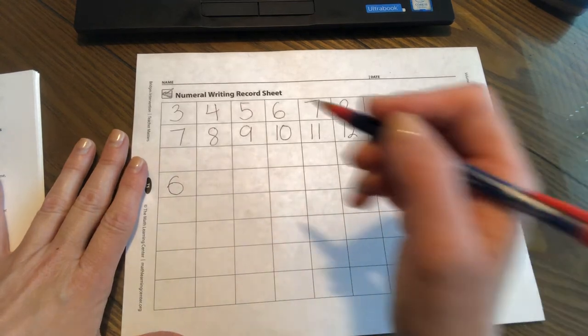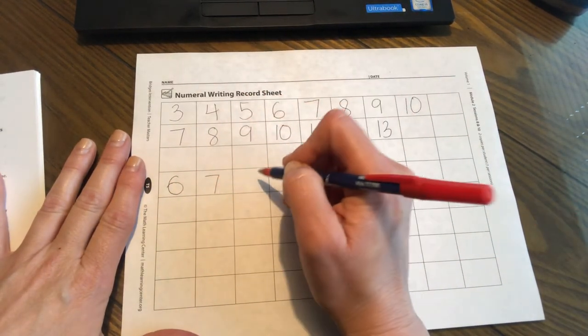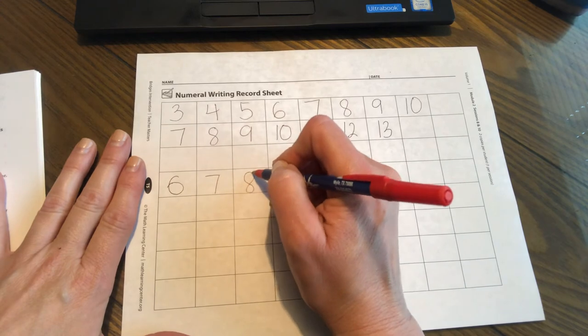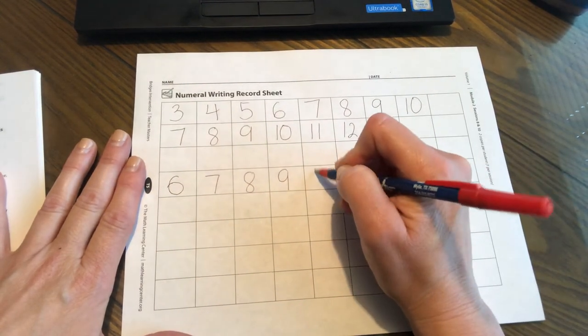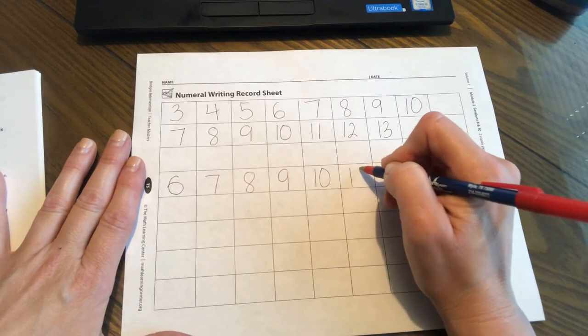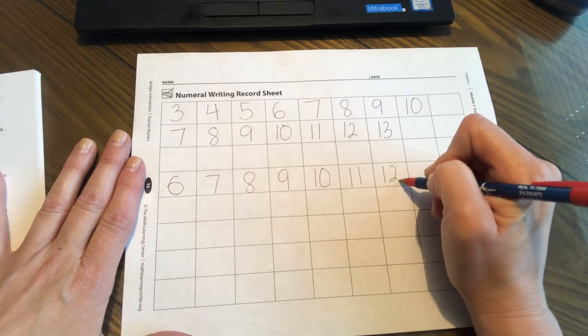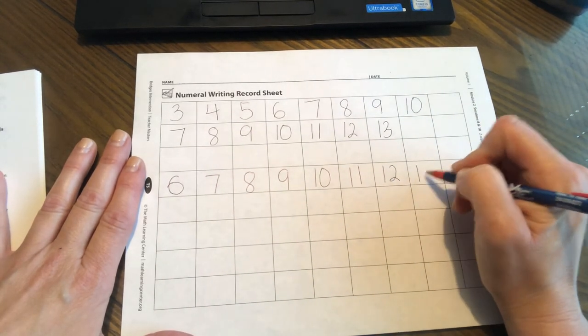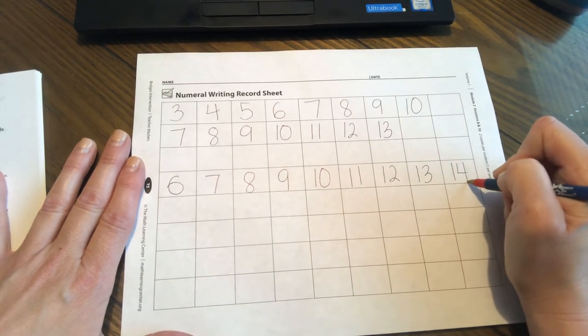Okay, let's do some writing. Are you ready? So we have six, seven, eight, nine, 10, 11, 12, 13, 14.